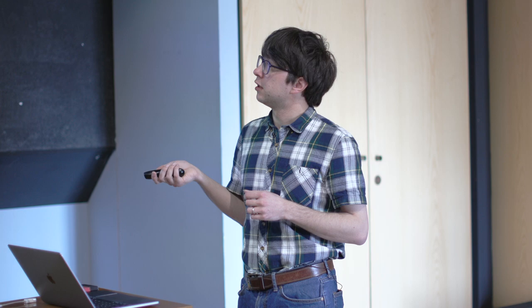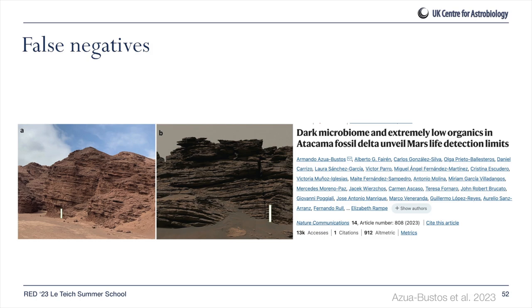A very recent paper describes rocks from the Atacama Desert in South America — similar to some sedimentary rocks on Mars — and found that although life was measurably present in this environment, the biomass was so low that the instruments on Mars rovers would really struggle to detect it. So in extreme environments with very low biomass, life can be present but below detection limits even for the latest rover instrumentation. We have to worry about false negatives as well as false positives.